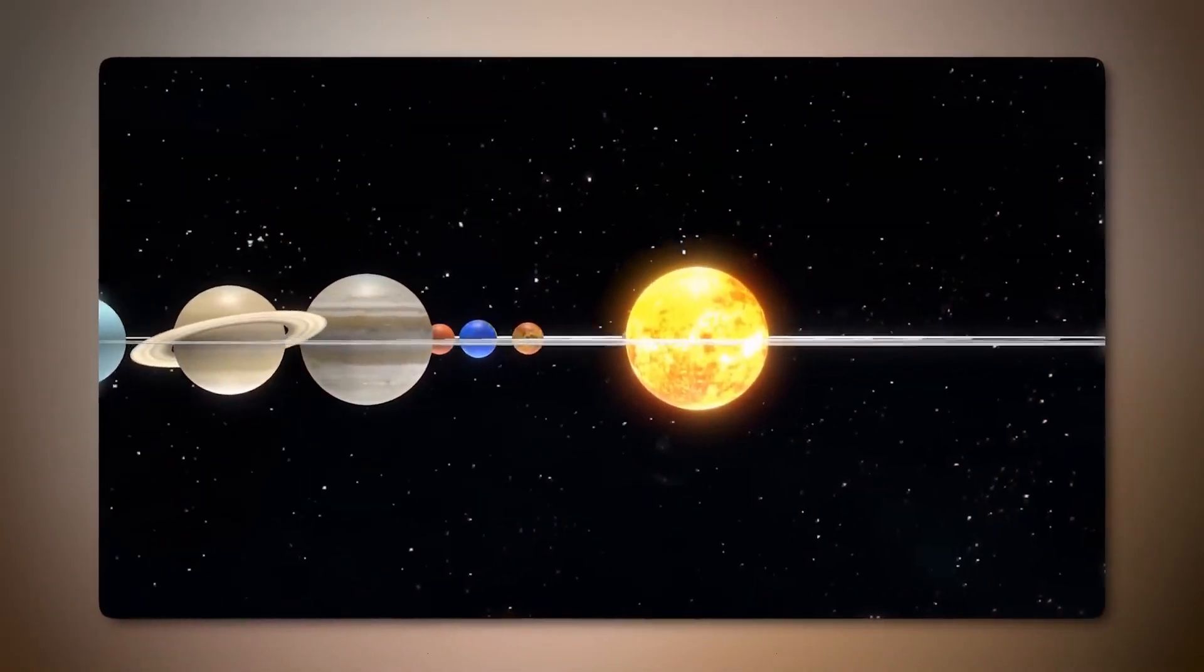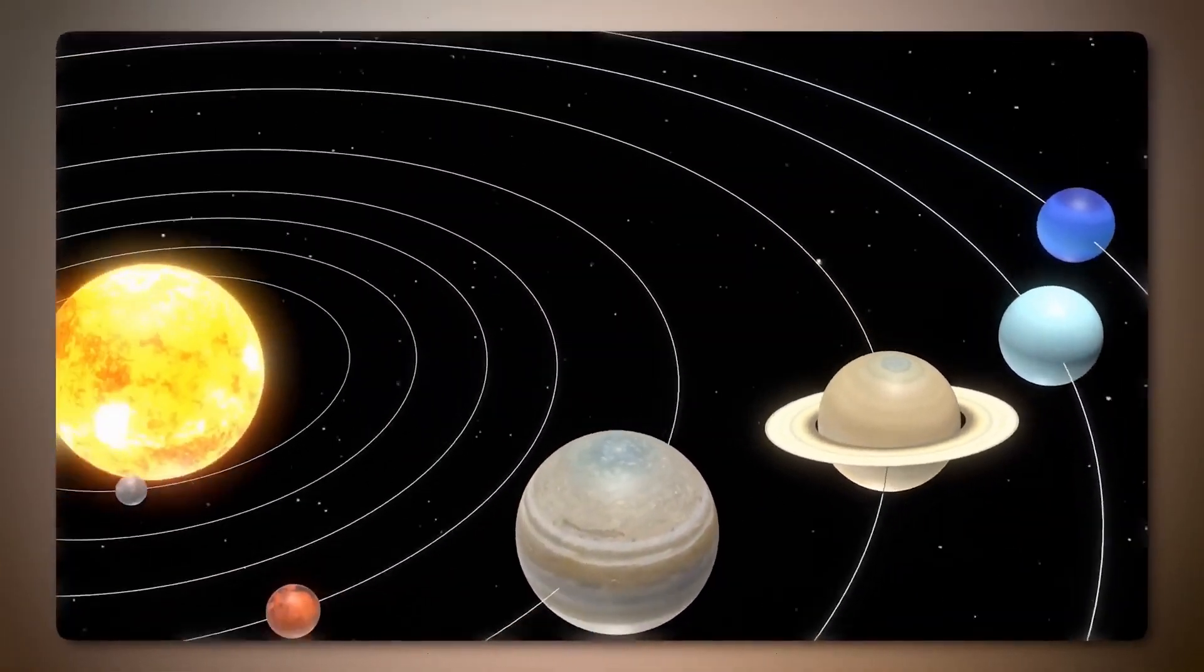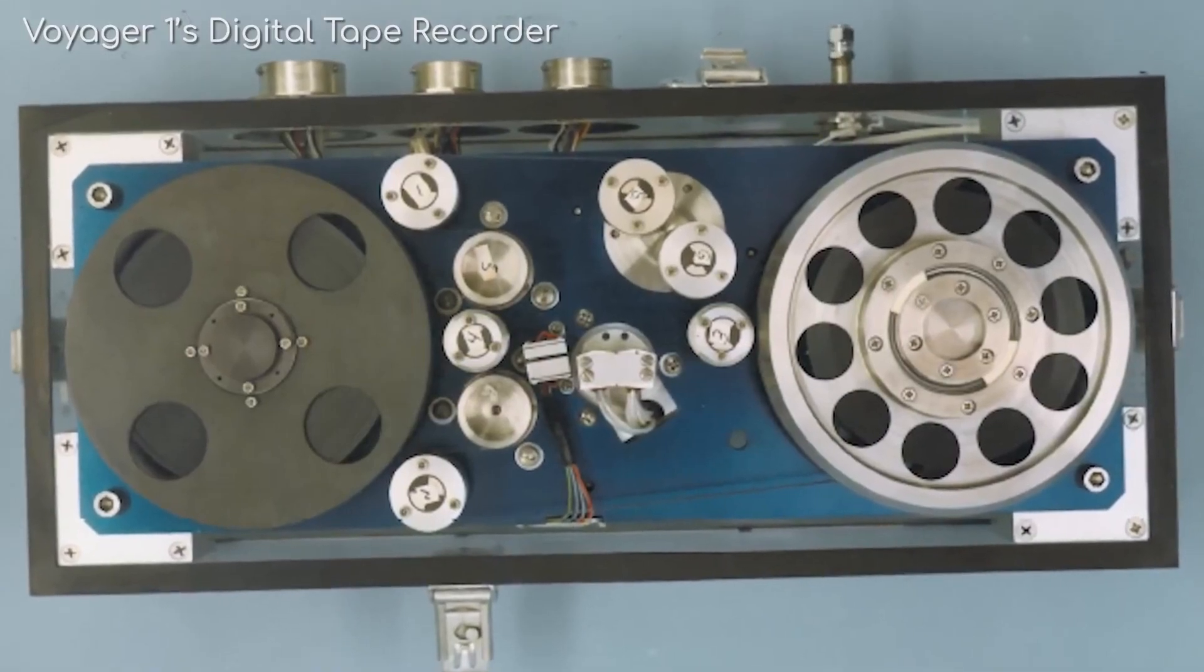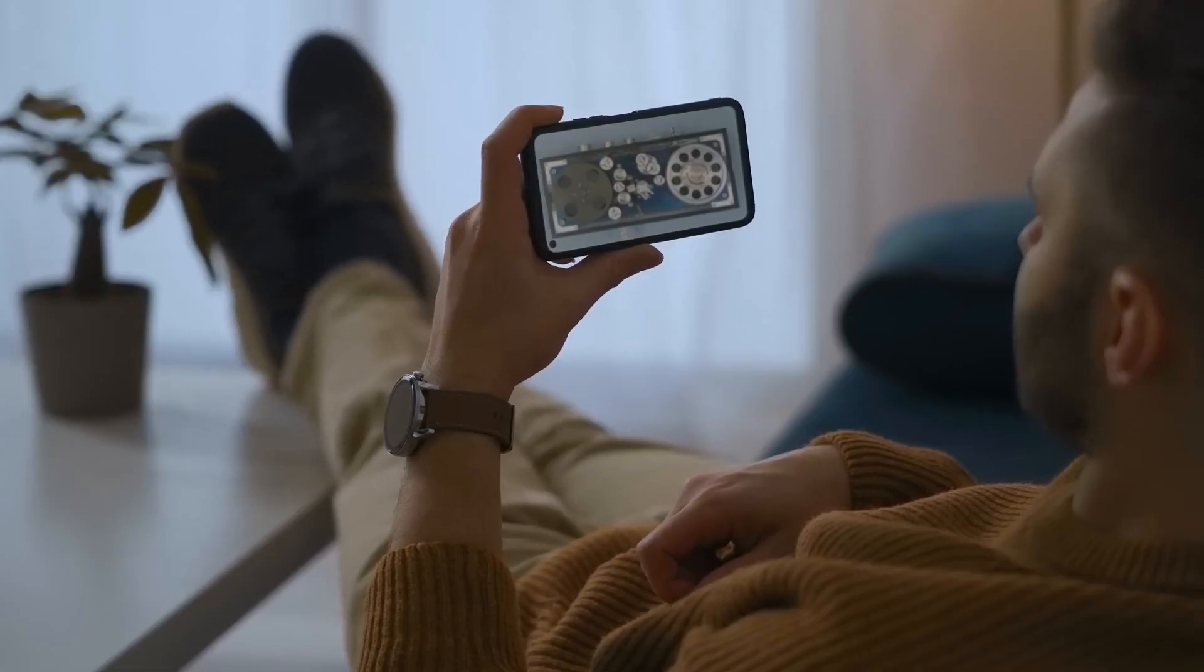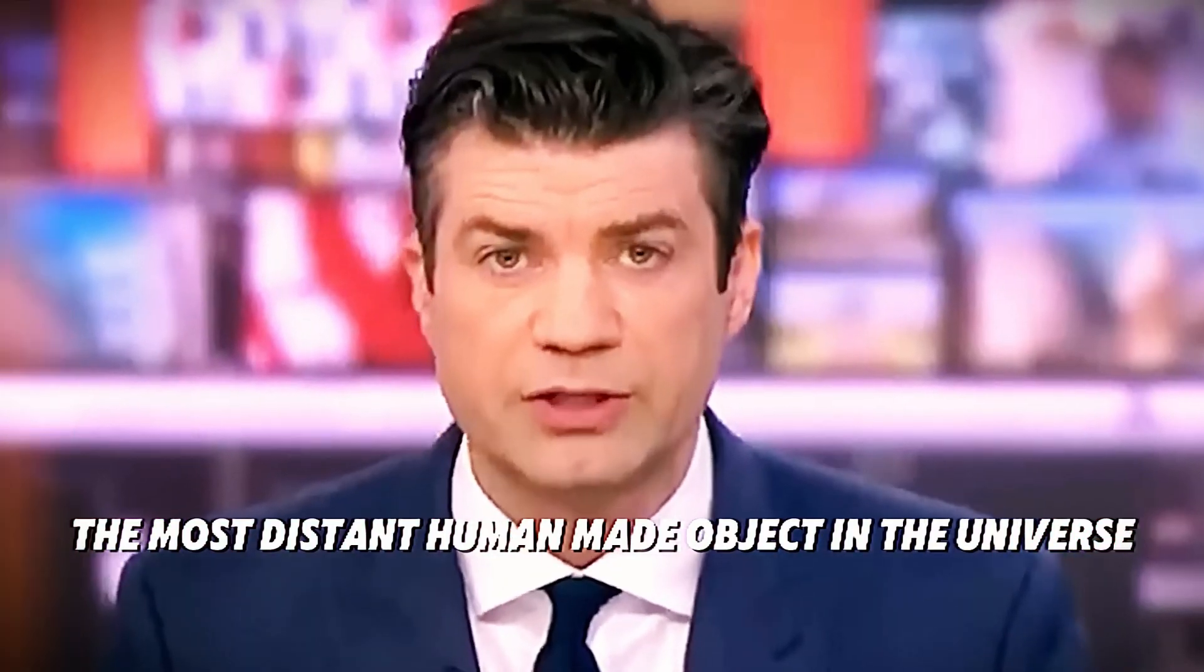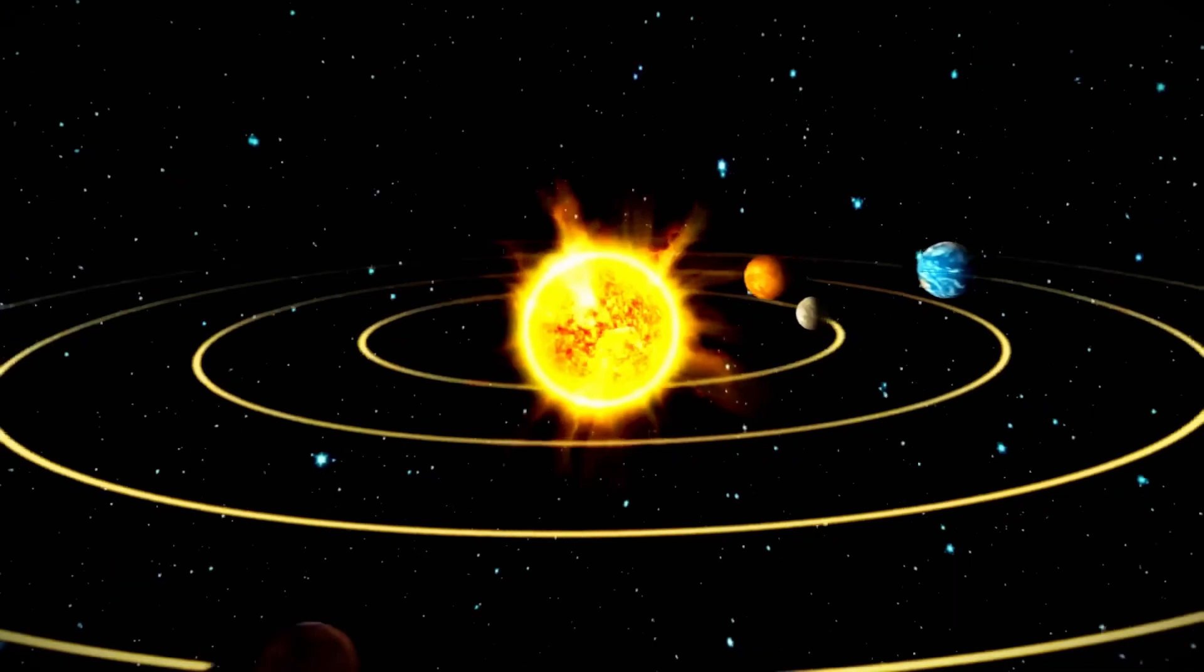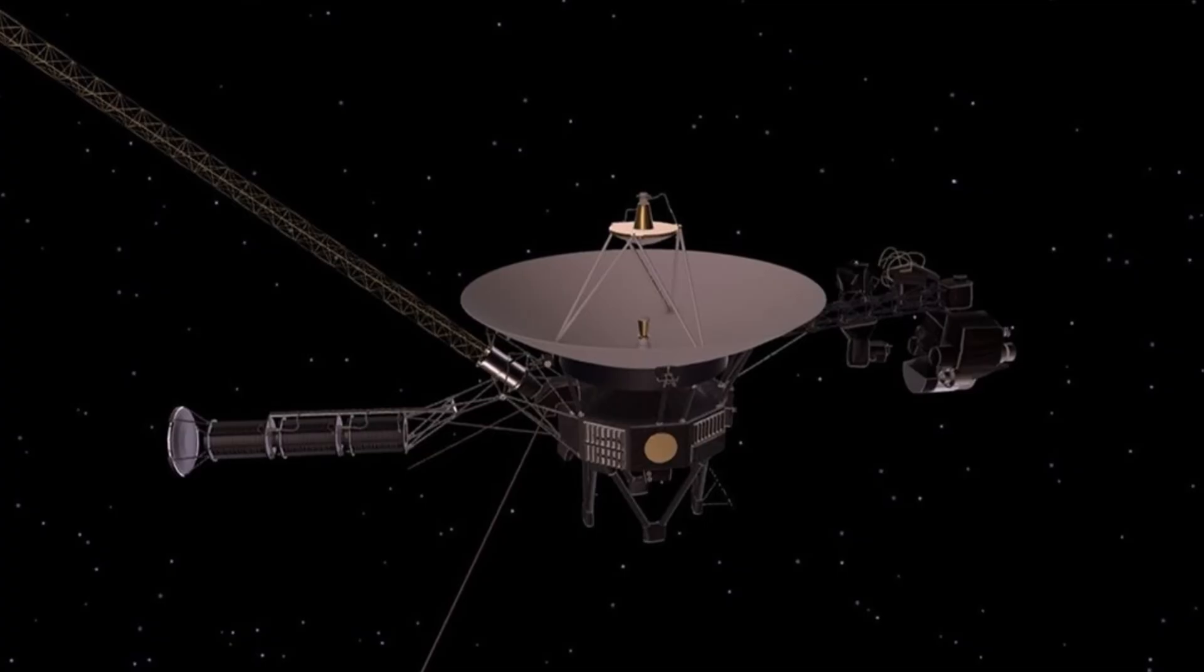On September 5, 1977, NASA's Voyager 1 spacecraft launched from Cape Canaveral, Florida aboard a Titan-Centaur rocket, just weeks after Voyager 2's launch on August 20th. Originally designed for a five-year mission to study the outer planets, these resilient probes have surpassed all expectations, continuing to send data back to Earth more than 44 years later.